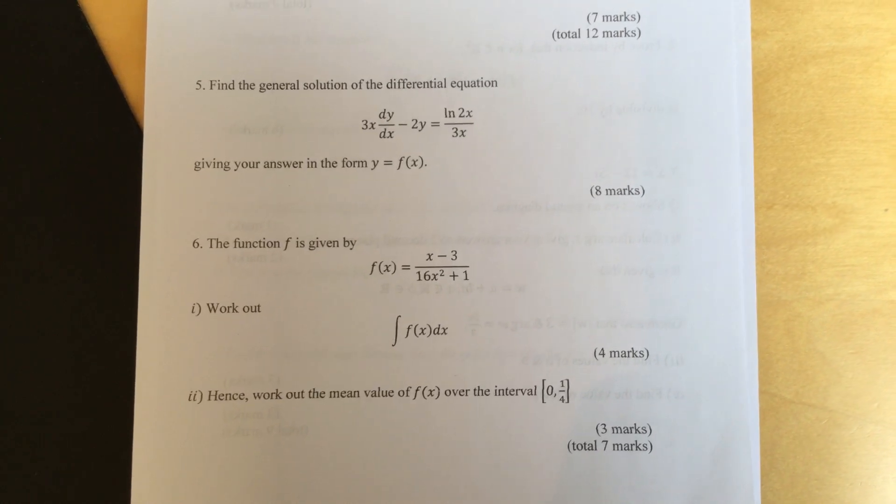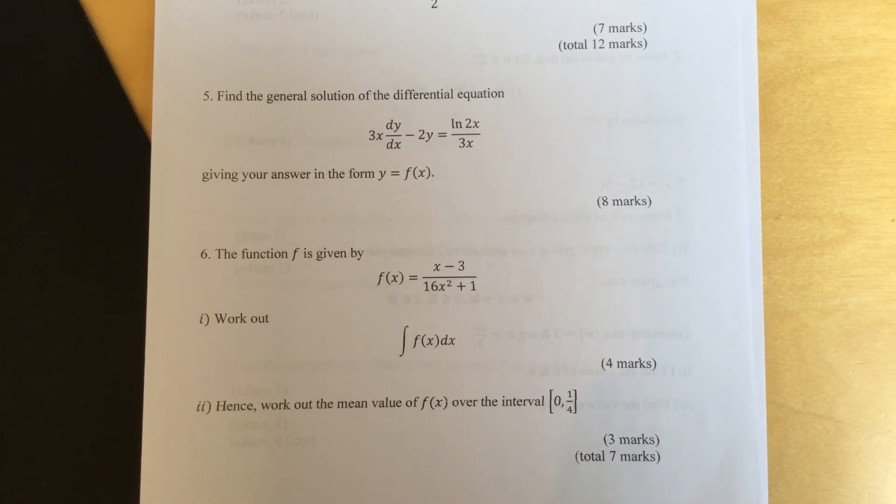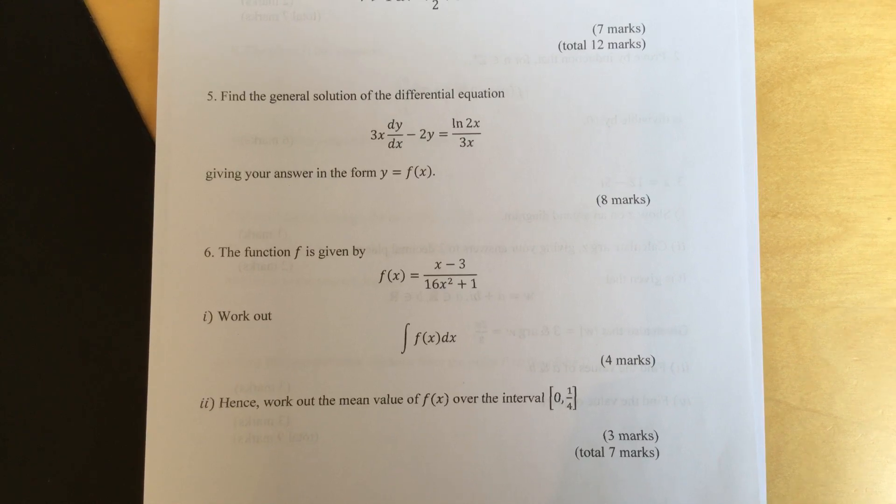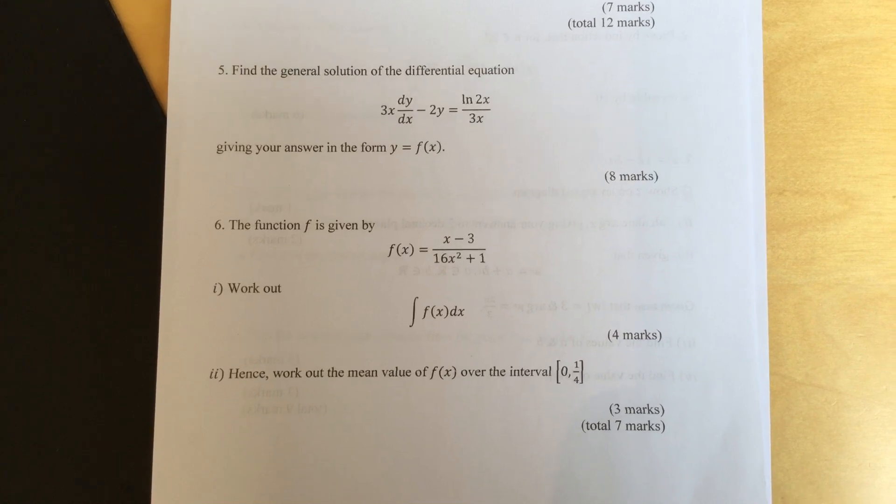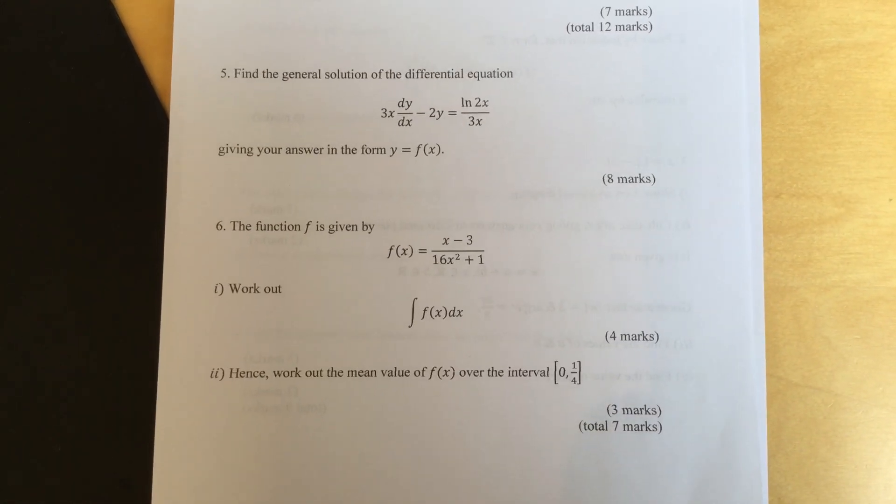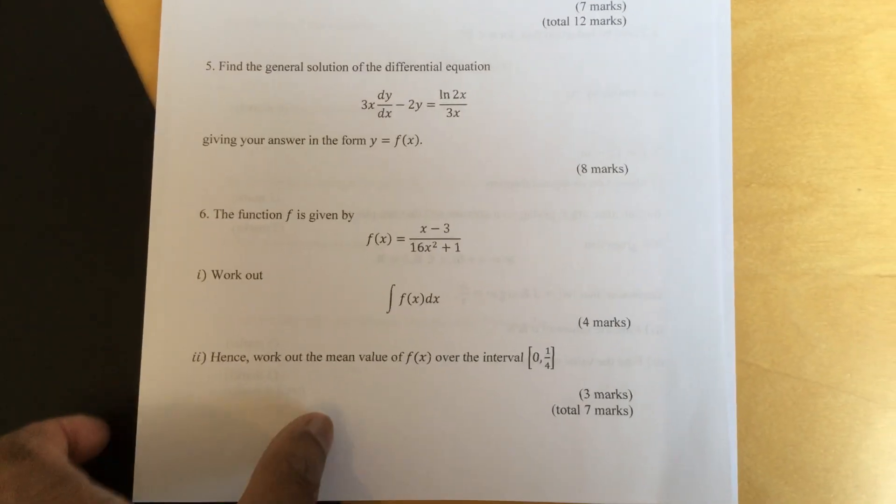Question six. The function f is given by f of x equals x minus 3 over 16x squared plus 1. Work out the integral of f of x dx. Part two, hence work out the mean value of f of x over the interval 0 to 1 over 4.